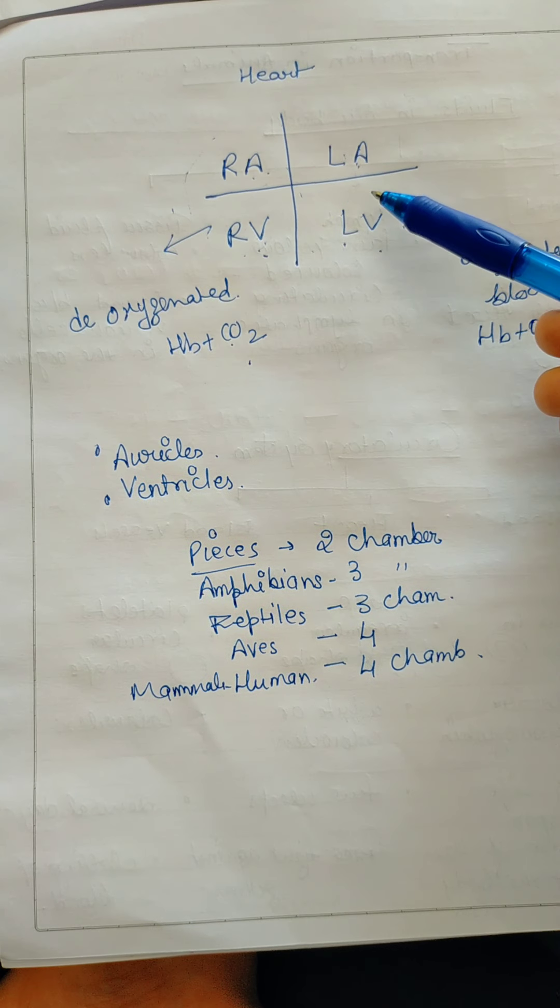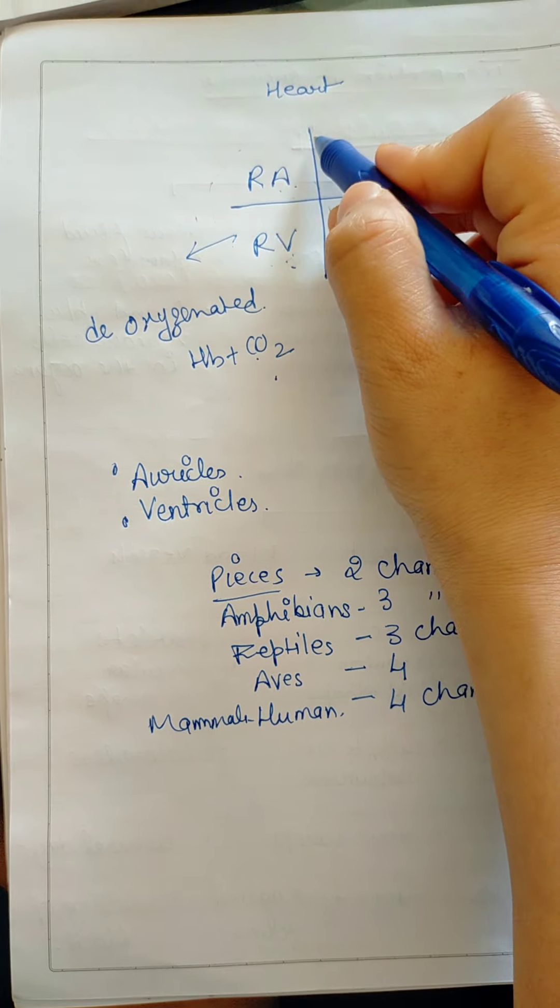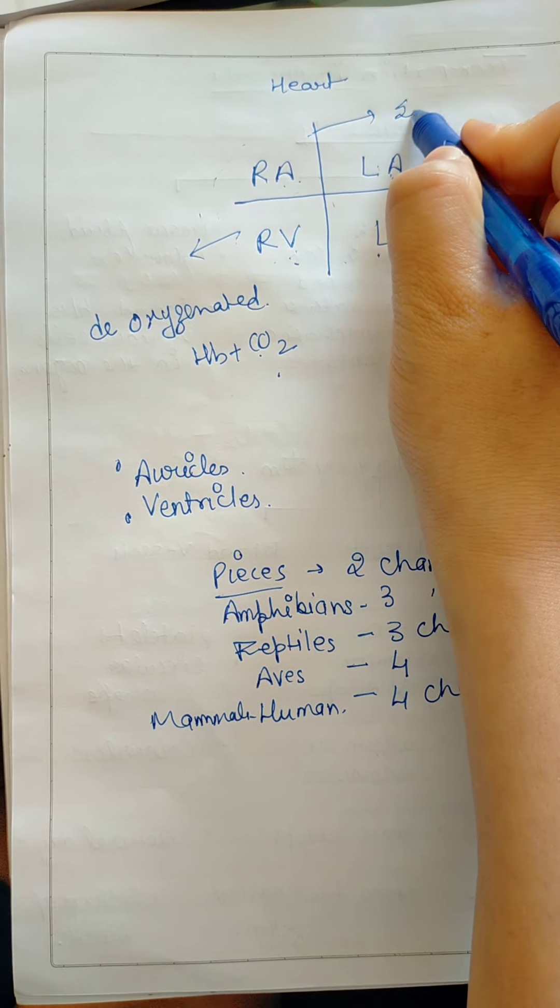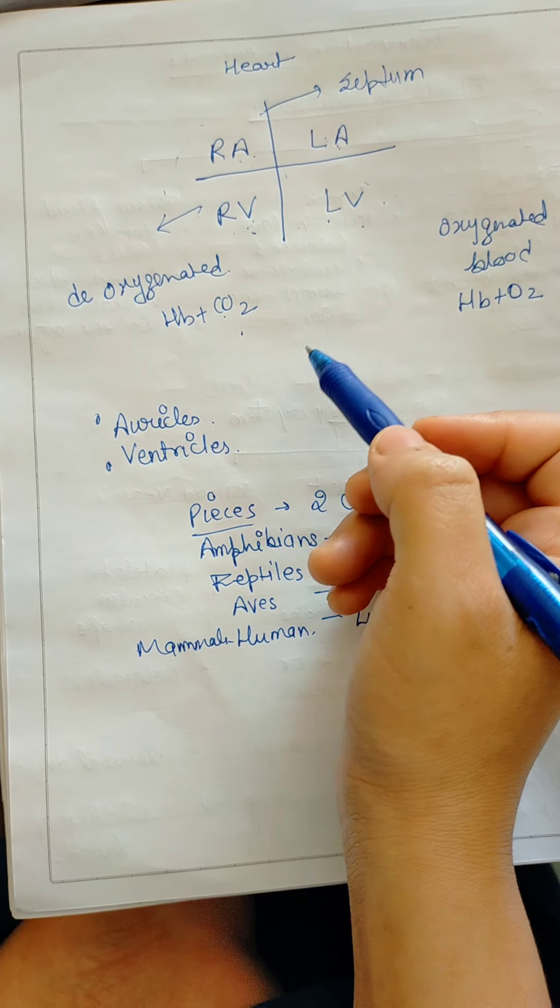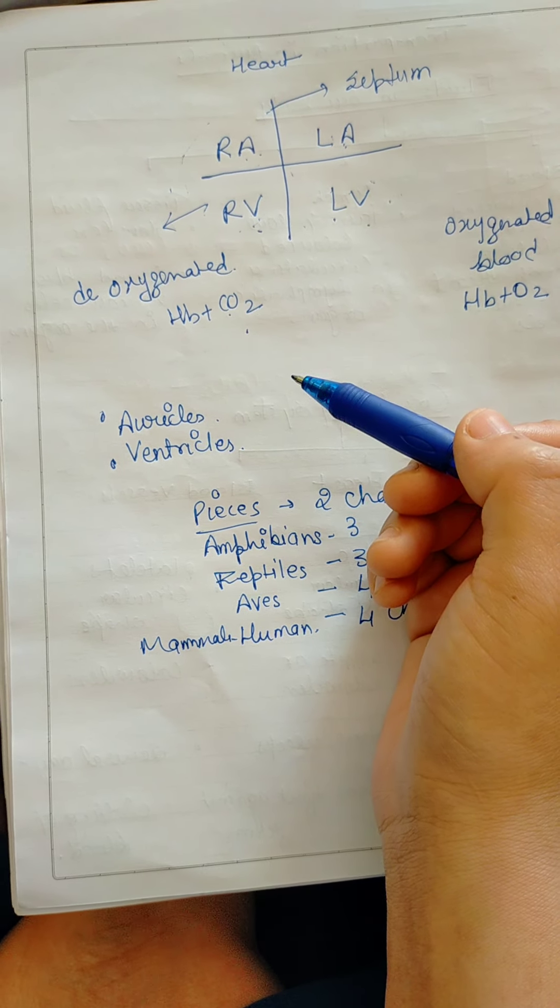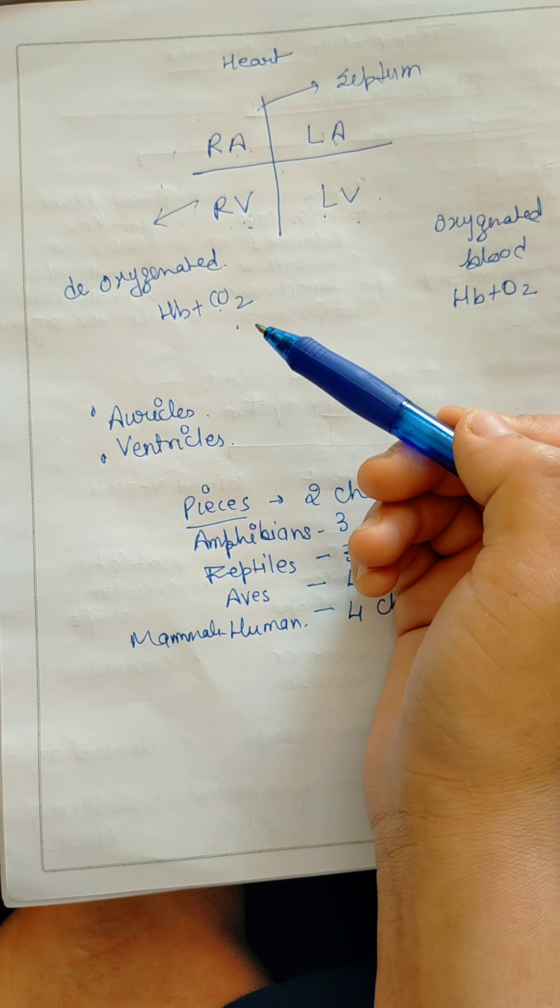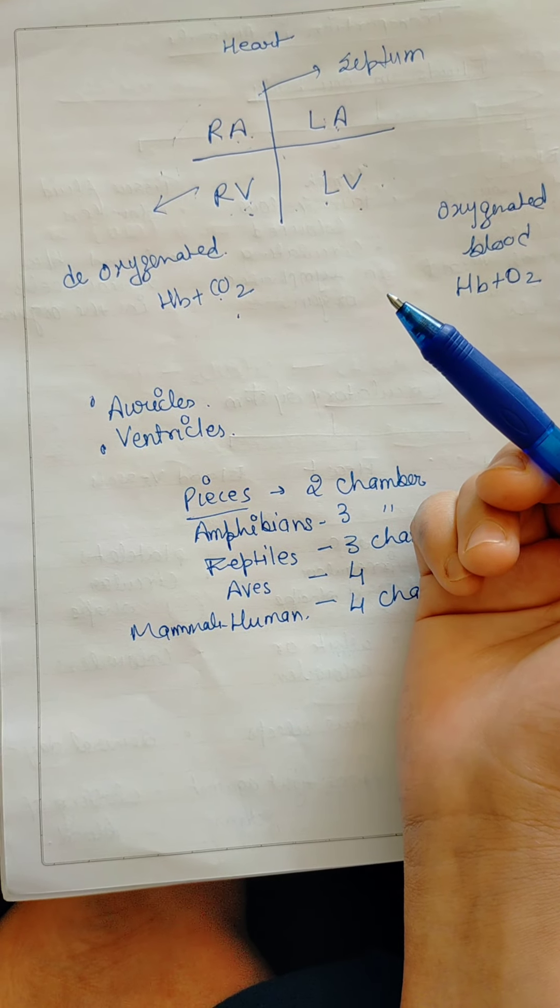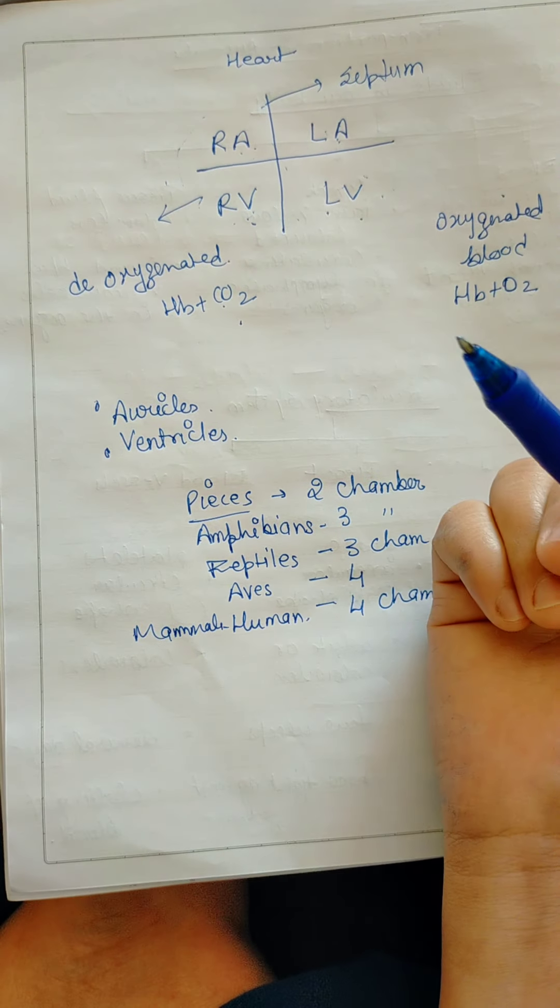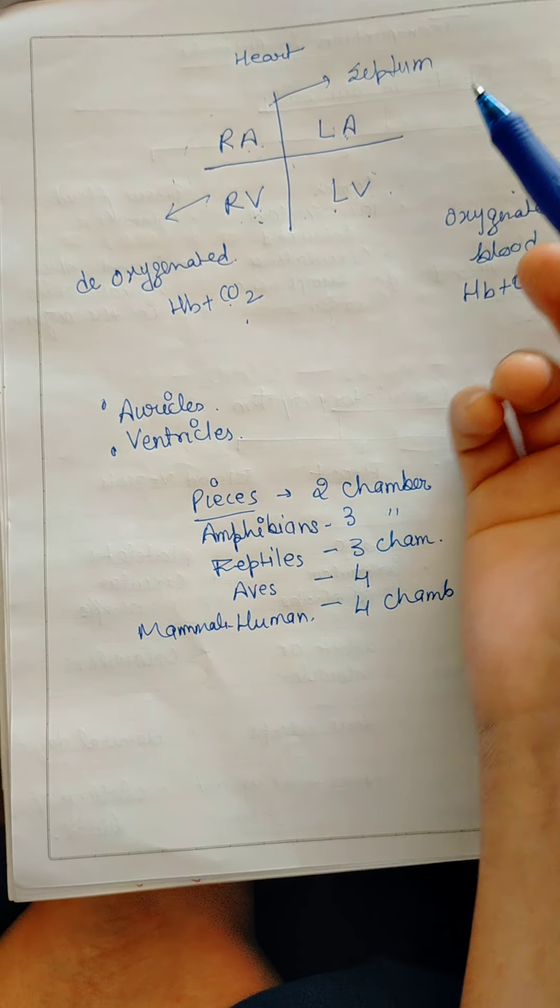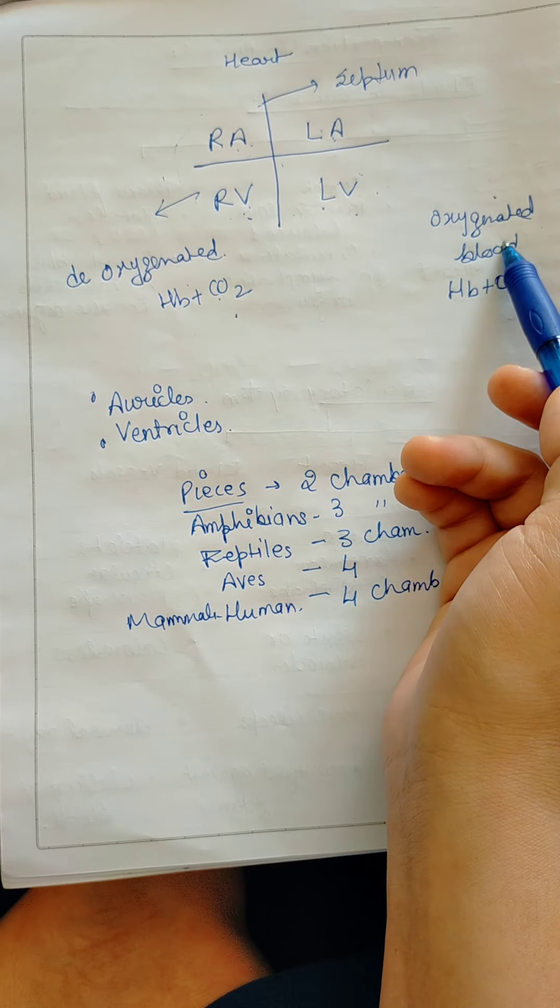Deoxygenated blood and oxygenated blood which is separated by septum. Now the question arises, why is it necessary to separate the oxygenated blood from the deoxygenated blood? This is why, if the oxygenated blood is mixed,